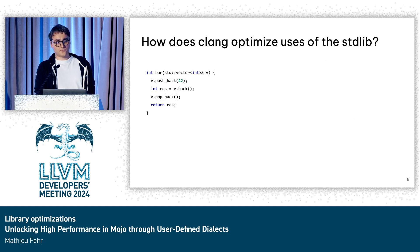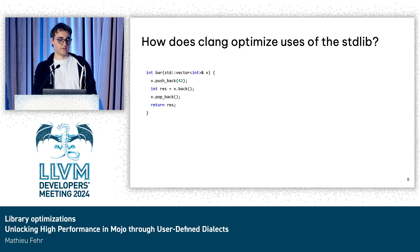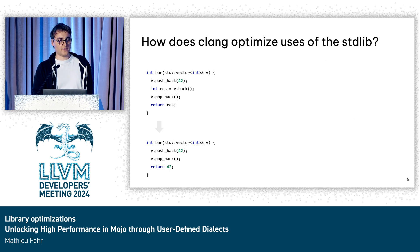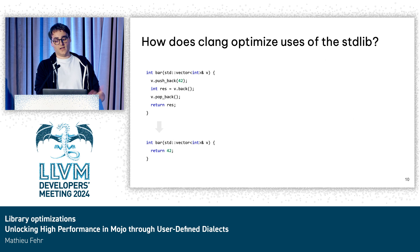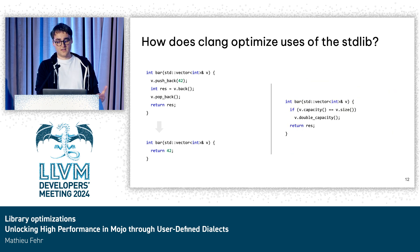Another example that shows a different kind of problem: if we take a vector of ints, we push back a value, we get the last value of the vector, and then we remove the last value we just added, and return the value. We can already see that getting the last value after a pushback is just equivalent to returning the value you just added. And one might think that if you push something and then pop it, this should be equivalent to doing nothing to the vector. If we ask Godbolt again, we see that it's not as easy as it seems — but this time the problem is not an inlining problem.